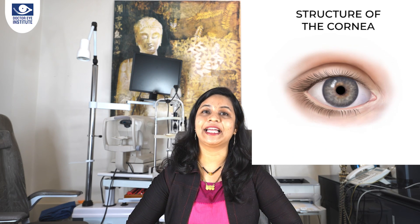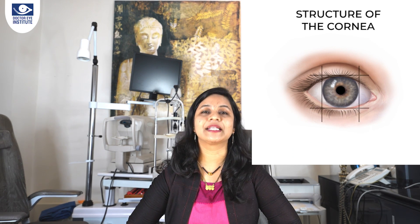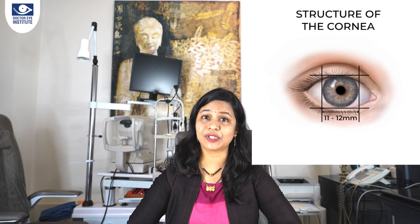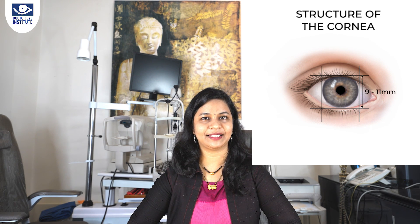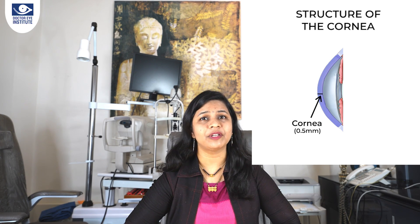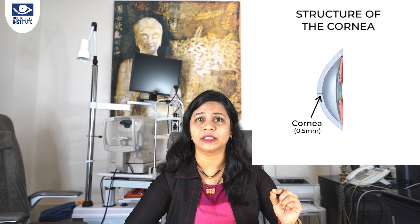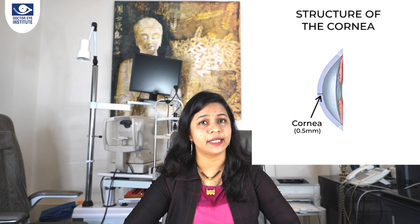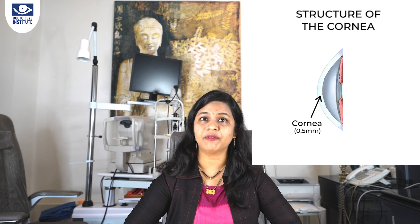Let us now understand the corneal anatomy — that is, the structure of the cornea. The cornea is the central round transparent part of the eye. You will be surprised to know that the adult human cornea measures 11–12 mm horizontally and 9–11 mm vertically. Another interesting fact is that the cornea is just 0.5 mm thick at the centre — just half a millimetre thick — so it may appear fragile, but it is as strong as a fingernail.